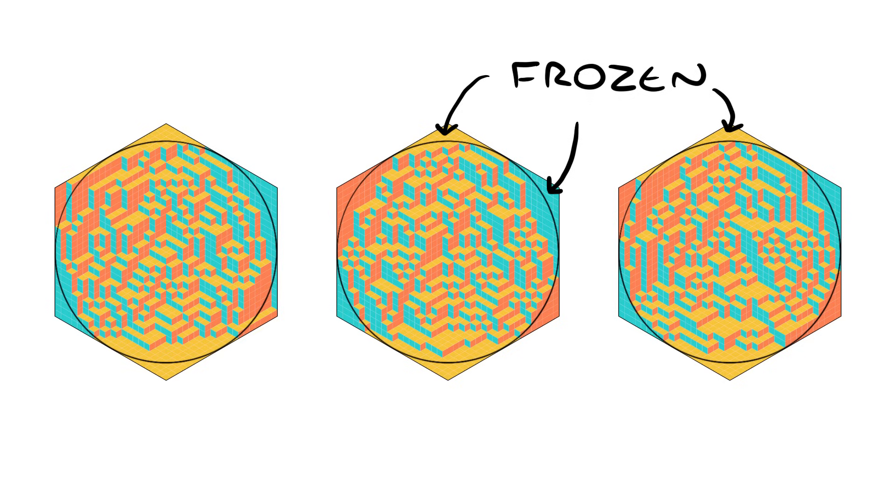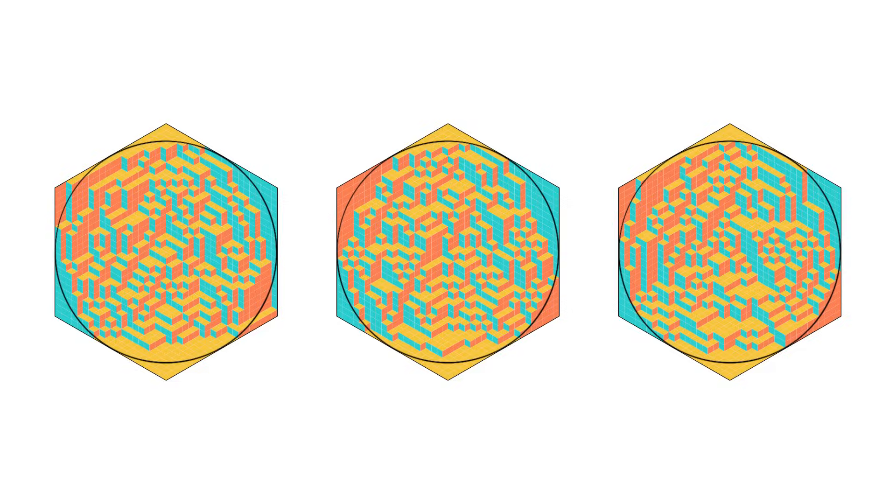These images are pushing the limits of what my computer can handle, but as the hexagon gets bigger, the boundary between frozen and liquid regions becomes a perfect circle.